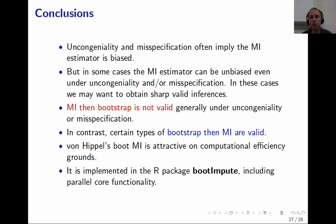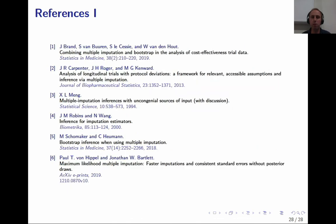In conclusion: uncongeniality and misspecification often imply that the MI point estimator is biased, but there are situations where the point estimator is unbiased and you may want sharp valid inferences. Imputation followed by bootstrapping is not generally going to give valid inferences under uncongeniality or misspecification. In contrast, certain types of bootstrapping followed by multiple imputation can give valid inferences. The von Hippel approach is attractive for its computational speed and is what we recommend. It is easy to program yourself and is also implemented in the R package bootImpute, which includes functionality for parallel cores. Thank you very much.